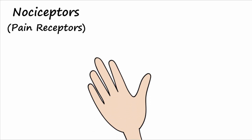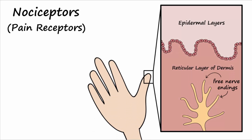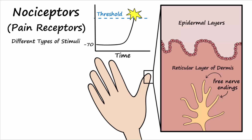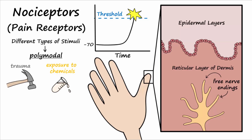The focus of this video is on nociceptor transduction. Nociceptors, or pain receptors, are free nerve endings that are capable of generating an action potential when they reach threshold. Different types of stimuli can cause activation of pain pathways by depolarizing the nociceptor and bringing it to threshold. Because many different types of stimuli can activate the nociceptor, nociceptors are referred to as polymodal receptors. Examples of stimuli that can cause pain include mechanical stimuli like trauma, exposure to chemicals, tissue ischemia from lack of oxygen, and temperature extremes.